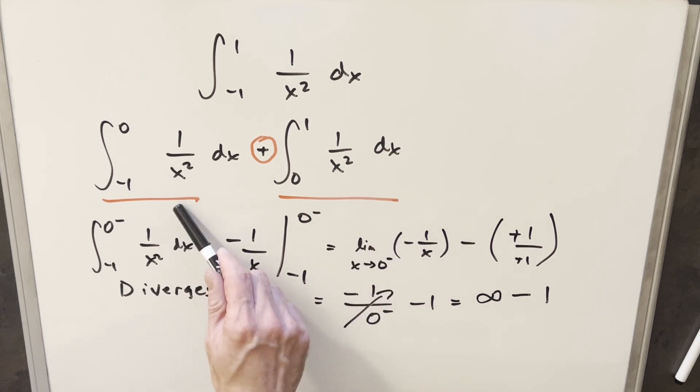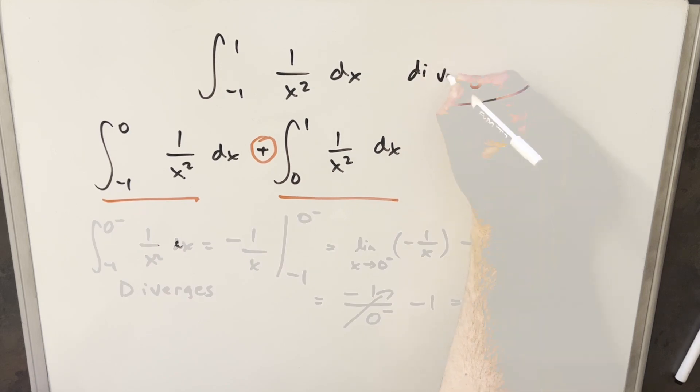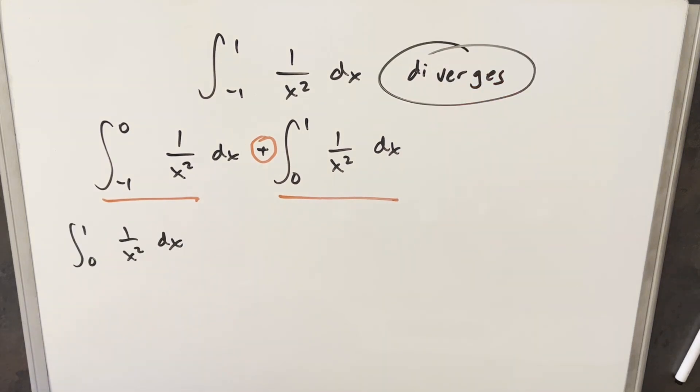Now, even though I don't need to, I'm still going to check this second one just to see what's happening. So we'll check this even though it's not going to affect our answer. So integrating again, we're going to have minus 1 over x just evaluated from 0 to 1. We'll plug in our 1. So the first part is just going to be minus 1 minus.